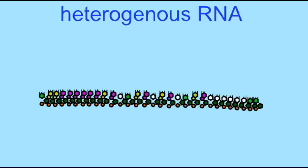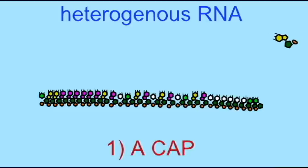There are several steps which must occur before the heterogeneous RNA, which is transcribed from DNA in the nucleus, can leave the nucleus as messenger RNA, which goes to a ribosome to be translated.